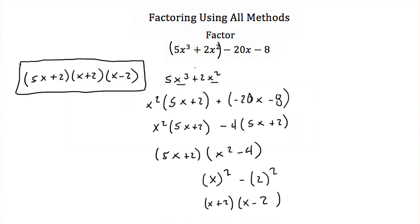When you're given a polynomial to factor, always try to find the greatest common factor first. Then look for any special patterns like difference of squares or perfect square trinomials. If you have more than three terms, especially an even number of terms, you can try grouping. Otherwise, use standard binomial factoring. That completes the tutorial on using all methods to factor.